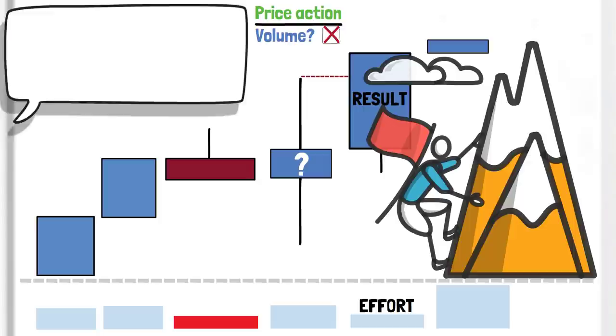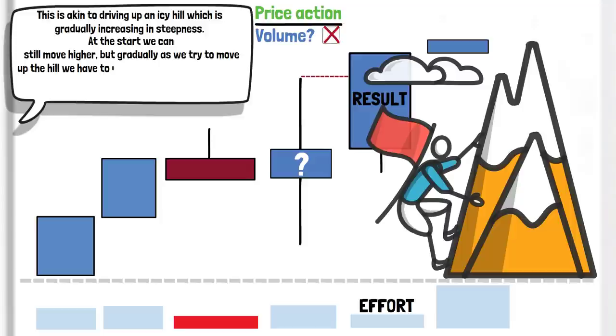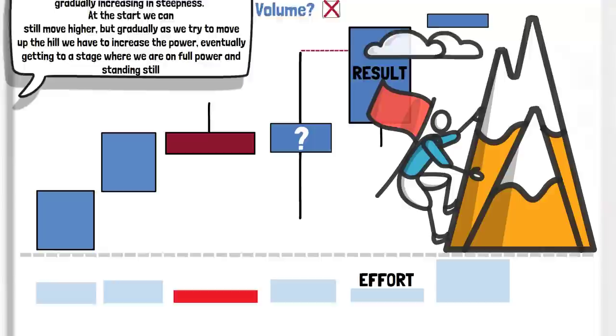I like Anna's analogy to cement this point, when she says, this is akin to driving up an icy hill which is gradually increasing in steepness. At the start we can still move higher, but gradually as we try to move up the hill we have to increase the power, eventually getting to a stage where we are on full power and standing still.